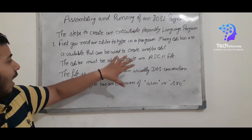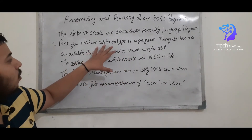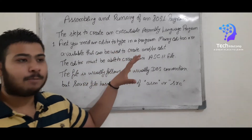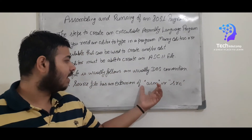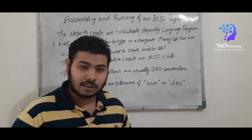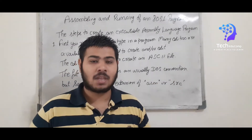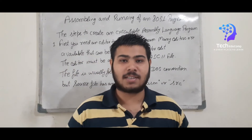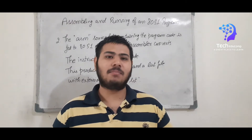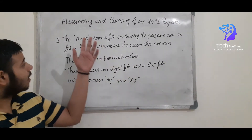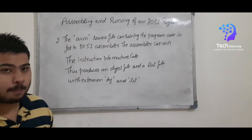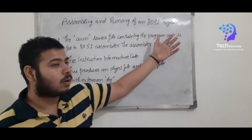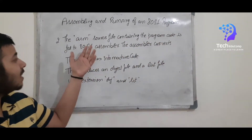So this was the first step of creating an assembly language program. We only need an editor that can be used to write the program, and the file extension will be .ASM or .SRC. Now we are moving on to step number two. The source file with extension .ASM, which contains the program code, is passed to the assembler.